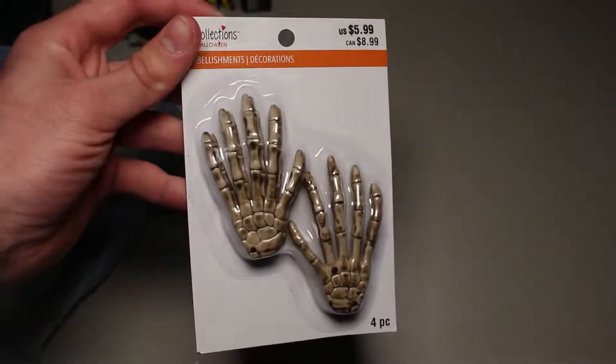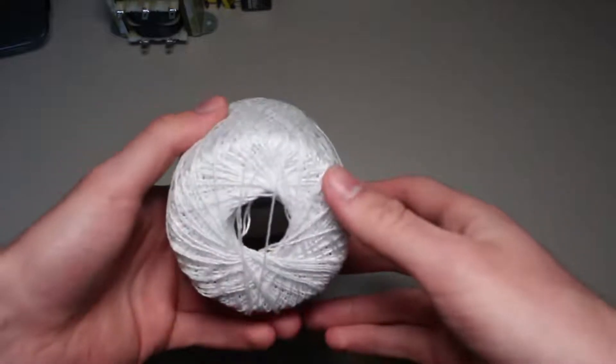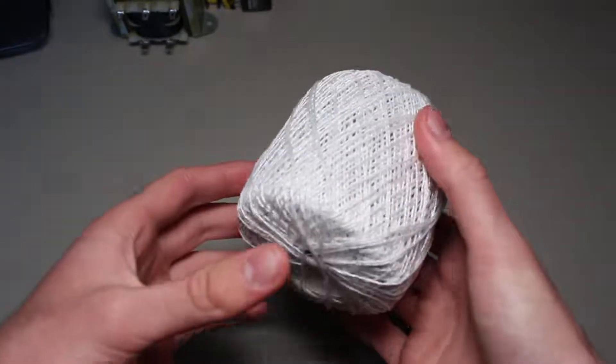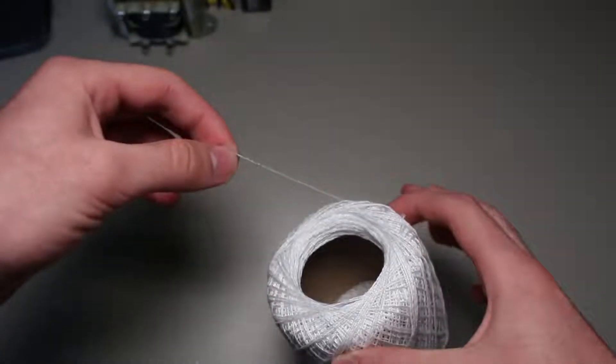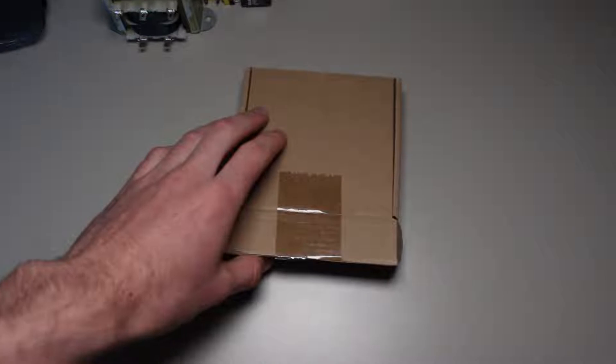We now need a way for the spider to climb up its own web, which is the hard part. Obviously, we need string for the spider to climb, so I chose this white yarn to construct the web. To make the spider climb the string, I got a pack of cheap motors to control the spider.